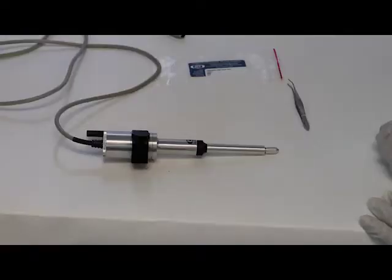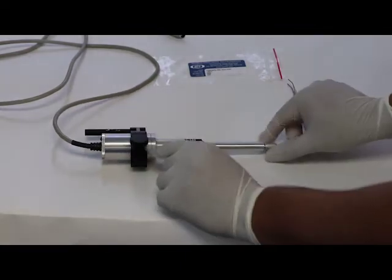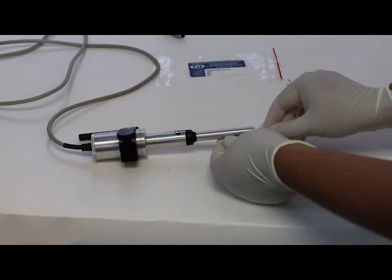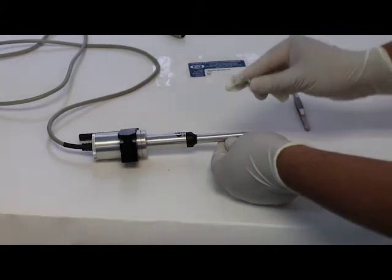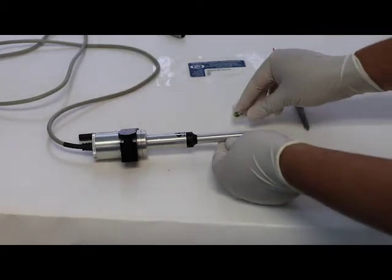Sometimes the gaskets get worn out and we have to replace gaskets to avoid leaks. So now we're going to show you how to remove the gaskets to replace them. The first thing that we do is remove the collet of the injector. As you can see, it comes out with the glass gasket.